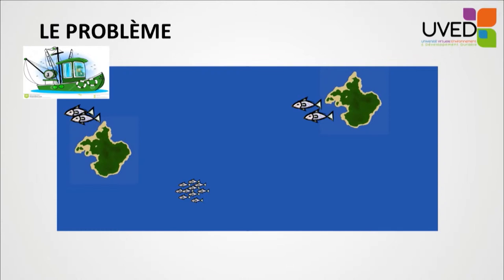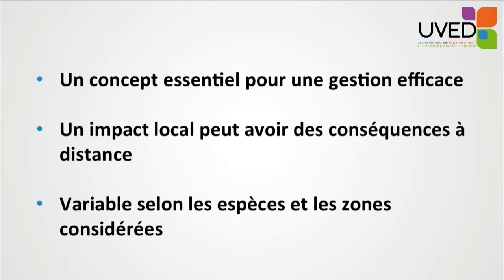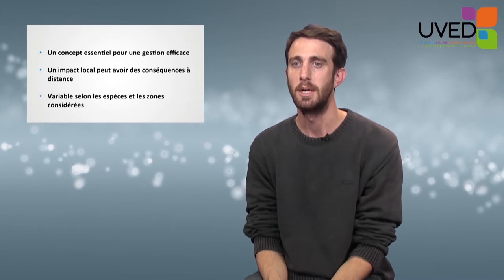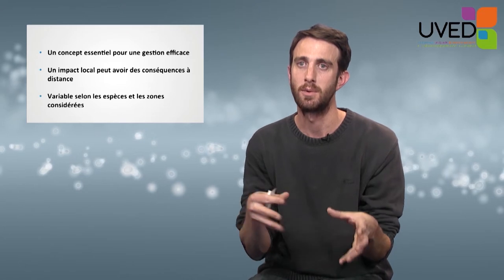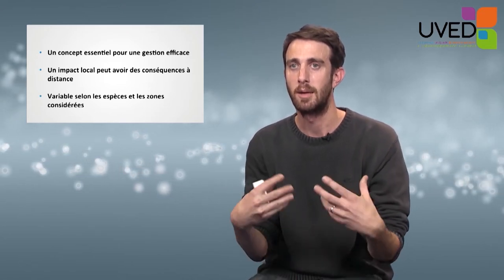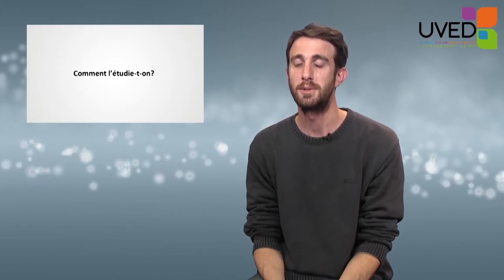We need to understand the exchanges taking place between the original reproduction area and the destination where the fishes will feed and grow, as this will influence how we implement protected marine areas. Take the example of a fisherman fishing on the left-hand island. If fishing is exaggerated and too many fish are caught, this impacts not only local fish, but also other islands, since fish will no longer reproduce and colonize elsewhere. This concept is essential, though some species stay local while others undergo very long larval dispersal phases.